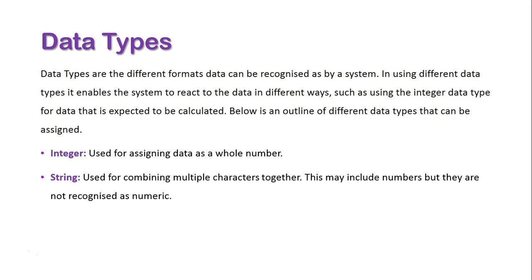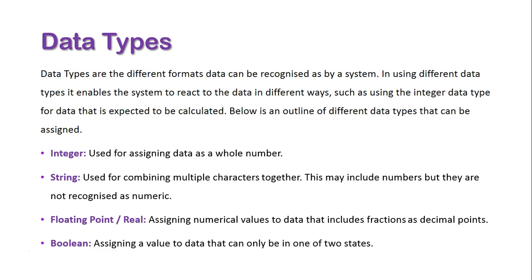This may include numbers but they're not recognized as numeric. Floating point or real is assigned to numerical values, enabling them to be stored as fractions and displayed as decimals. And finally, boolean, which is assigning a value to data which can only be in one of two states, like on or off.